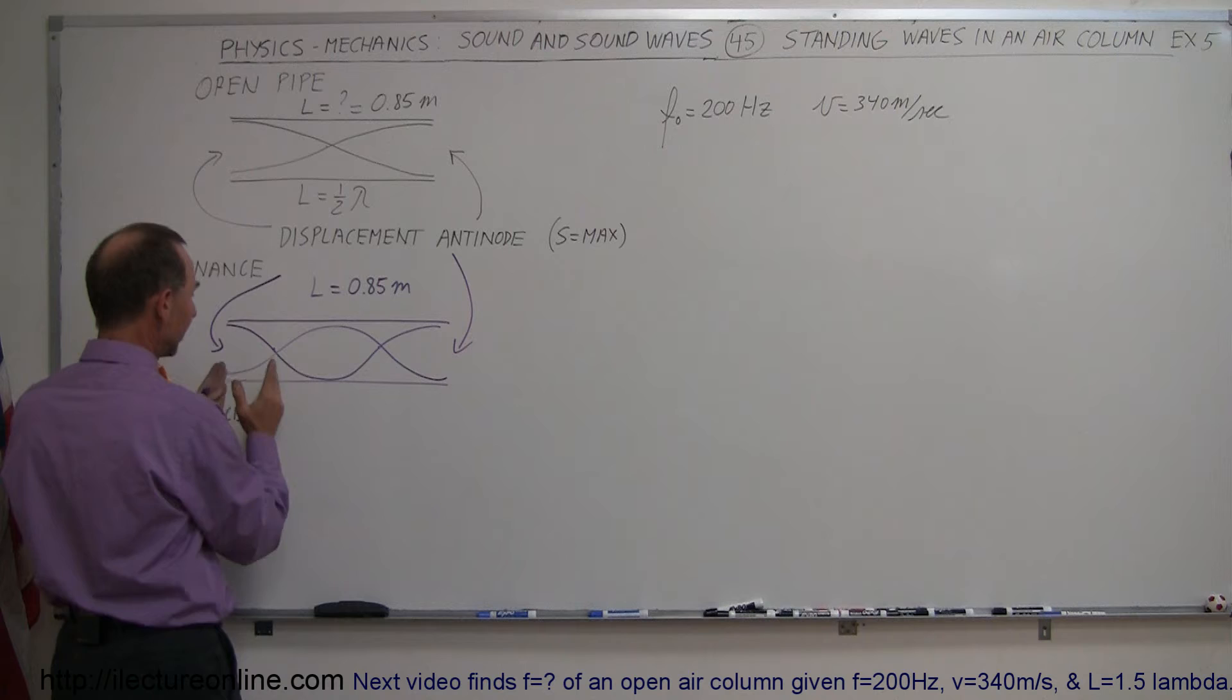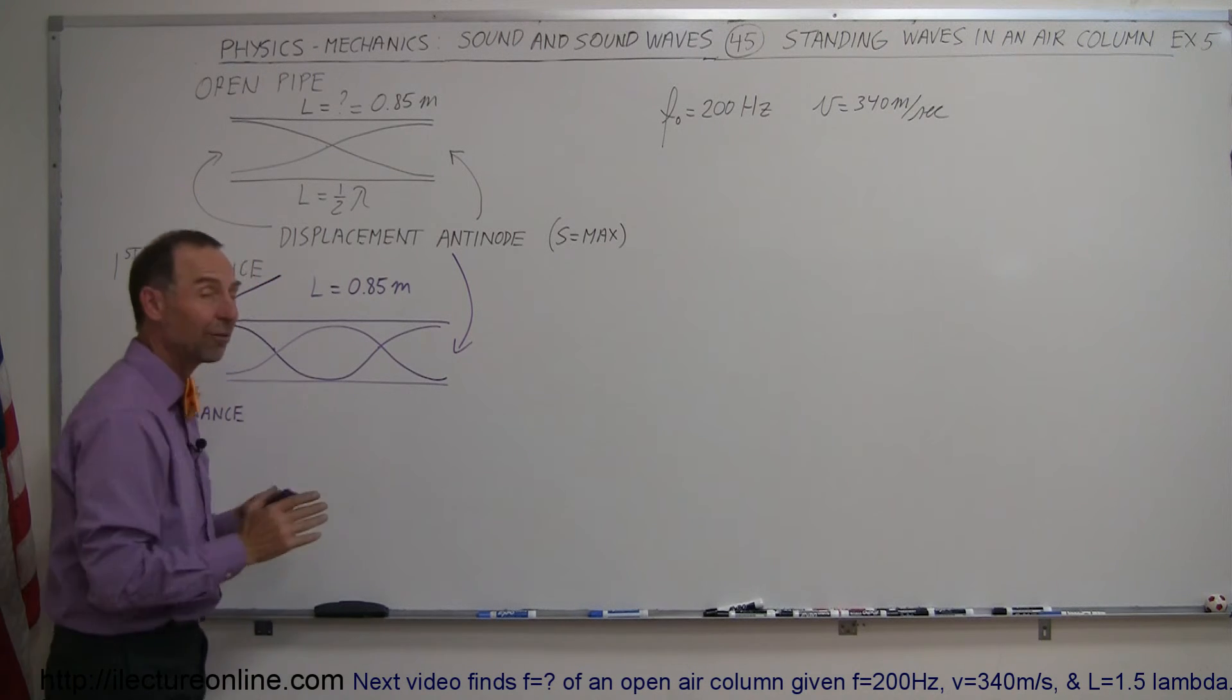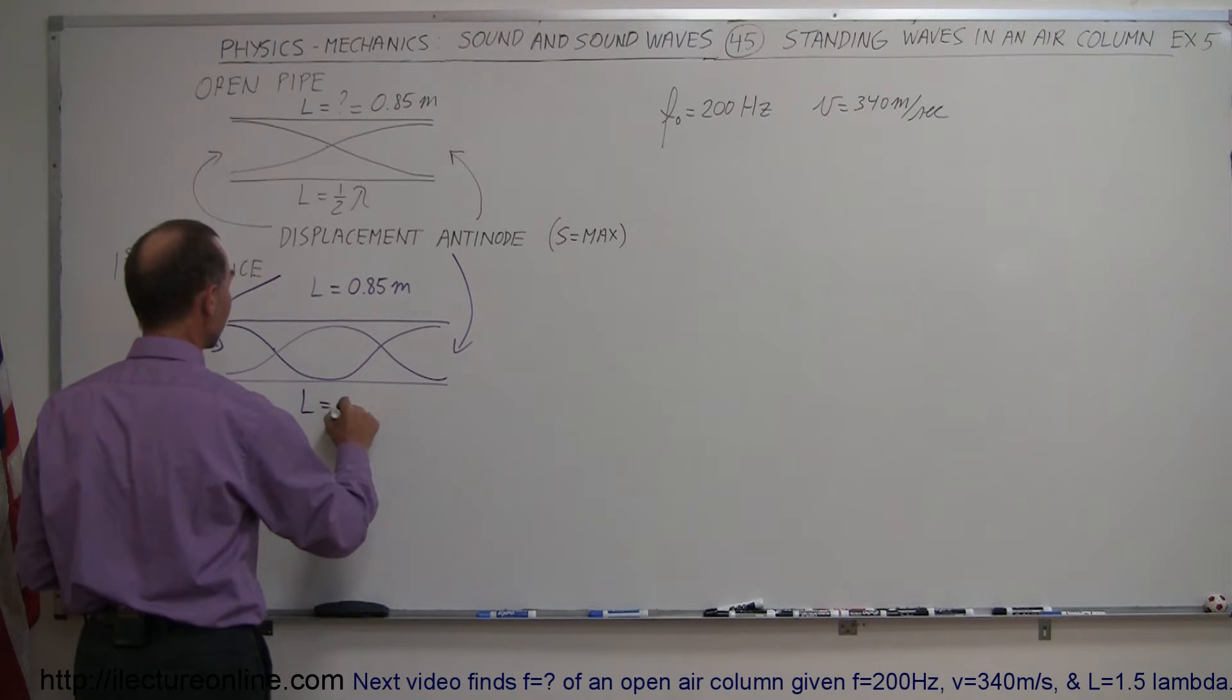Notice that this is a quarter of a wavelength, that's a quarter of a wavelength and there's a half a wavelength, so in this particular case we have the length of the pipe equal to one whole wavelength, so length equals lambda.